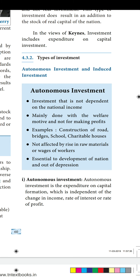Autonomous investment is the expenditure on capital formation which is independent of the change in income, rate of interest, or rate of profit. It won't depend upon the change of income, rate of interest, and rate of profit. It is independent — not depending upon any change in income or rate of interest. The investment is independent of economic activity.